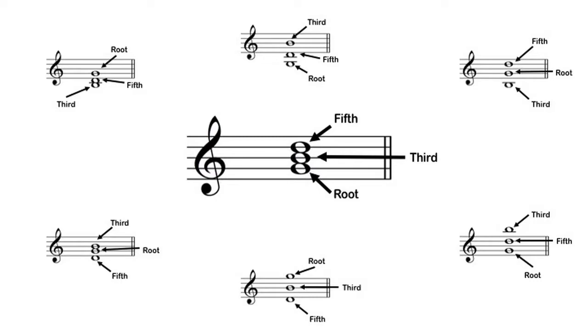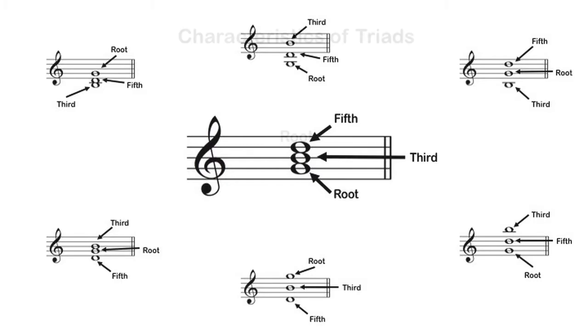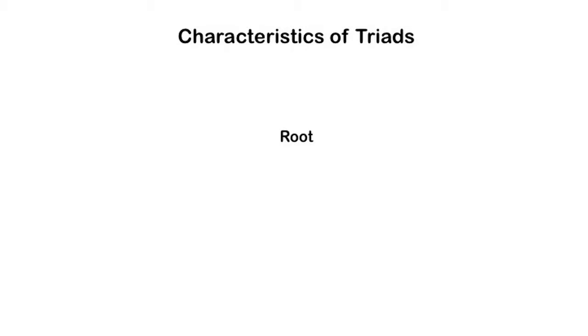When spelling triads, we need to pay attention to three particular characteristics of the triad. First is the root, which we've already discussed — that's the lowest pitch when the triad is presented in its most compact form.